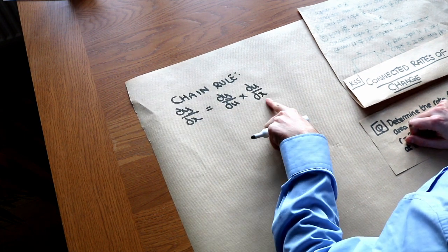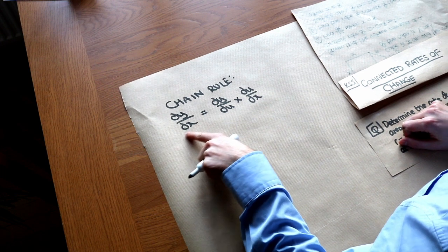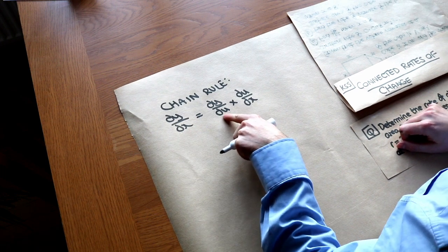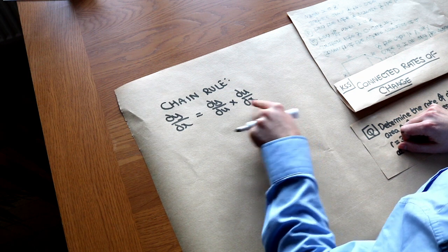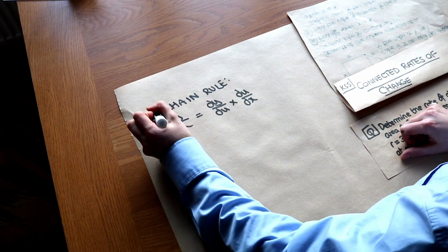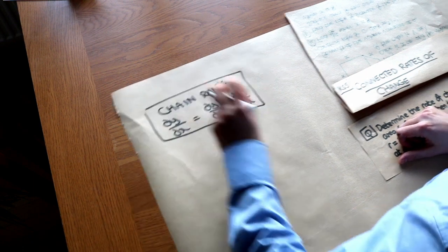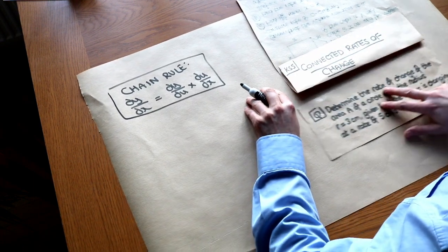Can you see that we have different rates here? This is the rate of change of y with respect to x, this is the rate of change of y with respect to u, and this is the rate of change of u with respect to x. I've related these three rates of change using the chain rule, and that's going to be useful in what we're doing just now.